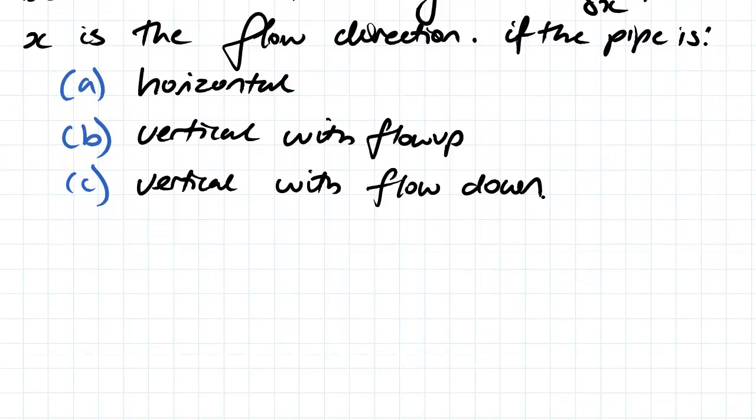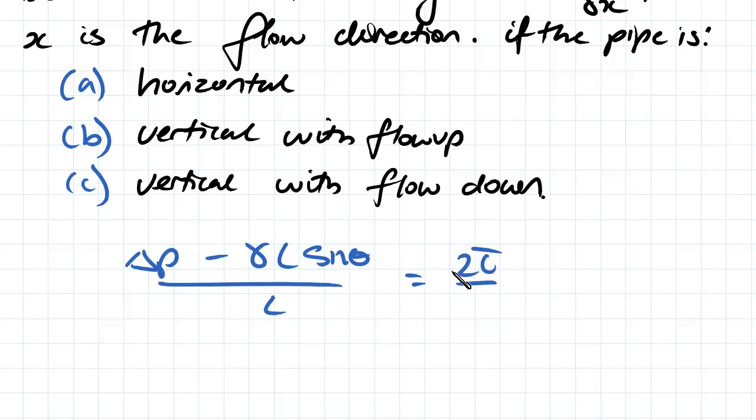For laminar pipe flow, we can apply the following equation that relates pressure with shear stress. The pressure drop minus gamma L sine theta divided by L is equal to 2 times the shear stress divided by the radius.